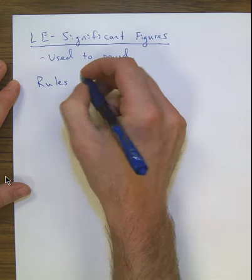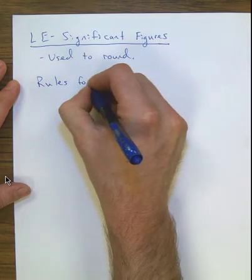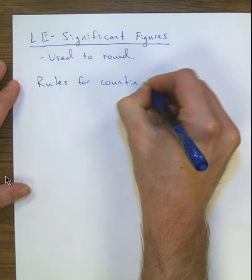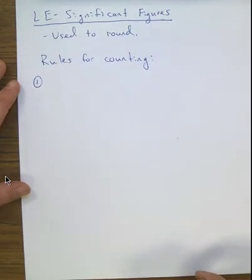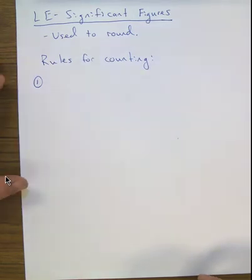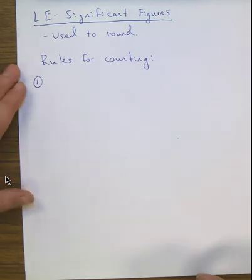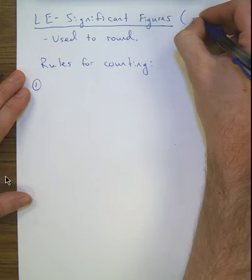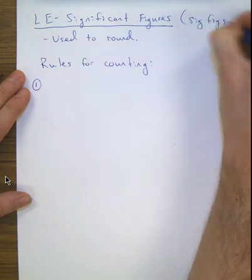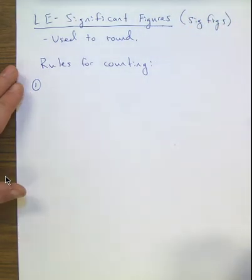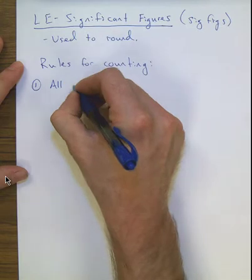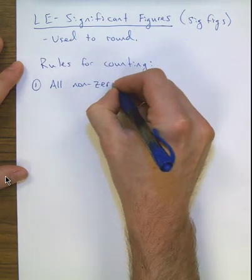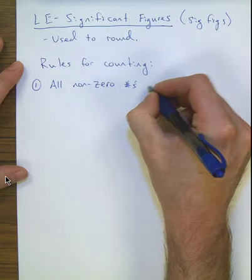There are only four rules for counting significant figures, and they're not terribly hard once you look at them. Rule number one: anything that's not a zero in a number is always counted as a significant figure. We often use the shorthand 'sig figs.' So rule one is that all non-zero numbers are significant.